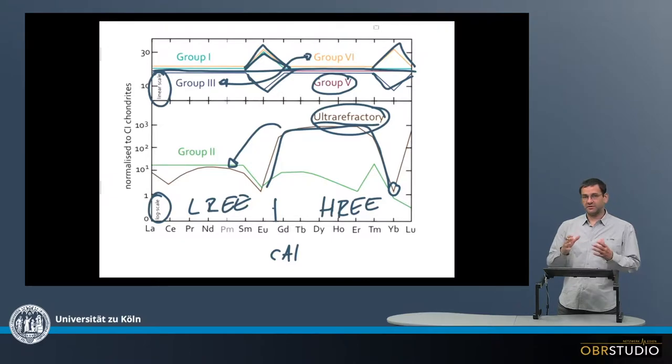This might be again due to volatility, but it could also be due to partitioning of the rare earth elements maybe in different minerals, and then these are included to different extents into the various CAIs.